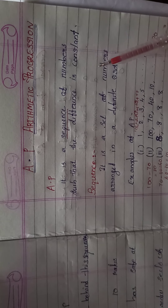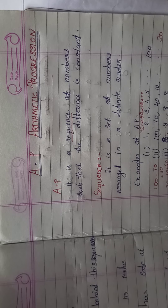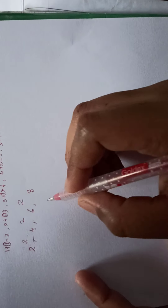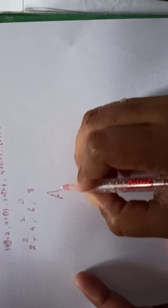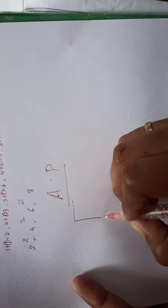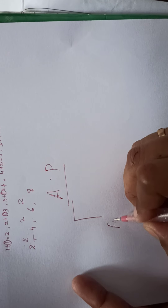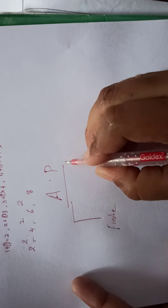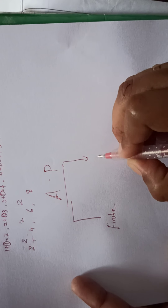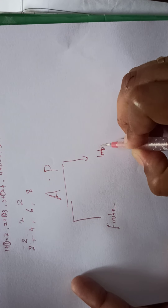There are 2 types of arithmetic progression. AP is of 2 types: the first one is finite AP and the second one is infinite AP.